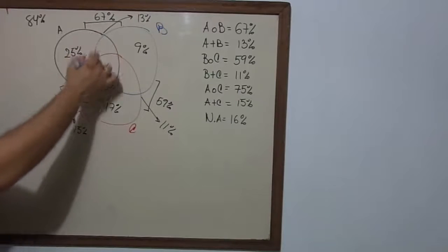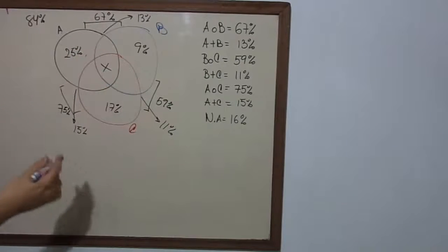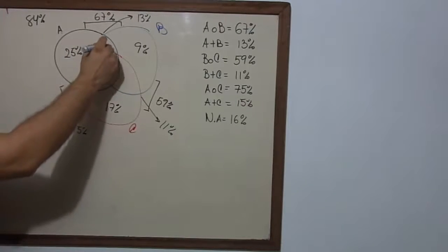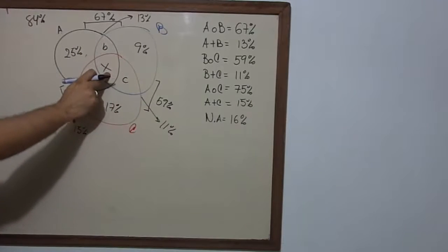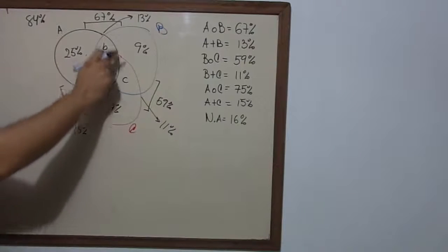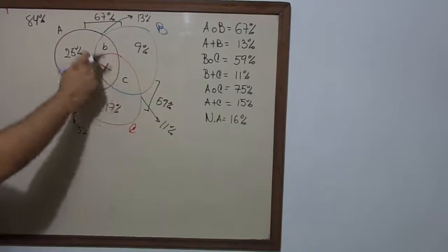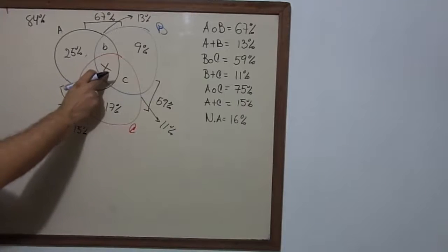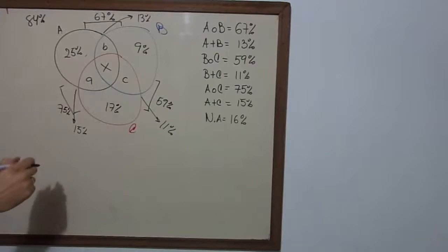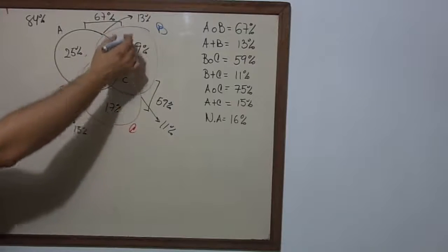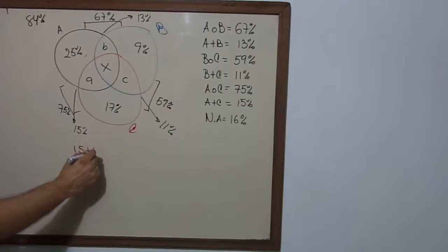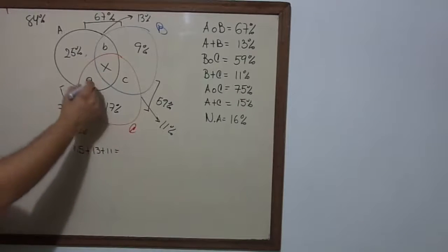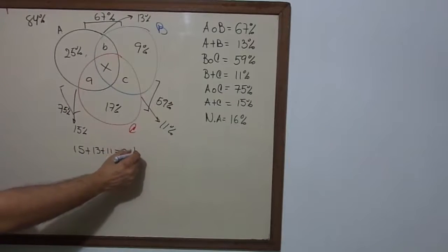We're going to add this, this, and this, and this is going to be equal to A plus B plus B plus C plus 3 times X. Because if you add these 3 zones, you're going to add 3 times X. Let's see. 15 plus 13 plus 11. That equals A plus B plus C plus 3 times X.